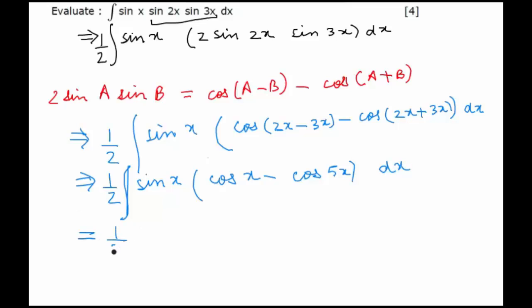We can now open the bracket. We would get half integration and separate it as well: sin x cos x dx minus half of integration sin x cos 5x dx.